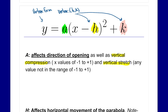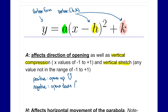Things to consider about direction of opening: if a is positive, it opens up — that's a parabola that looks like a U shape. If a is negative, it opens down — it looks like an n shape.